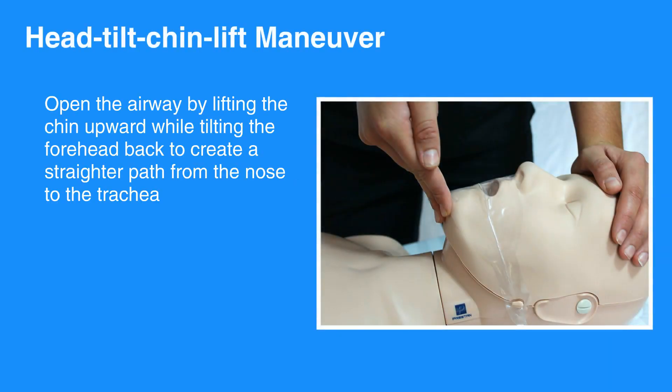CPR is performed with the individual lying on their back. Gravity causes the jaw, the tongue, and the tissues of the throat to fall back and obstruct the airway. The airway rarely remains open in an unconscious individual without any external support. Therefore, you have to open the airway by lifting the chin upward while tilting the forehead back. This is known as the head tilt-chin lift maneuver. The goal is to create a straighter path from the nose to the trachea.